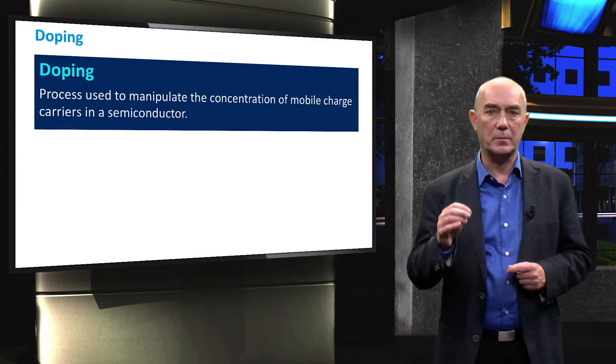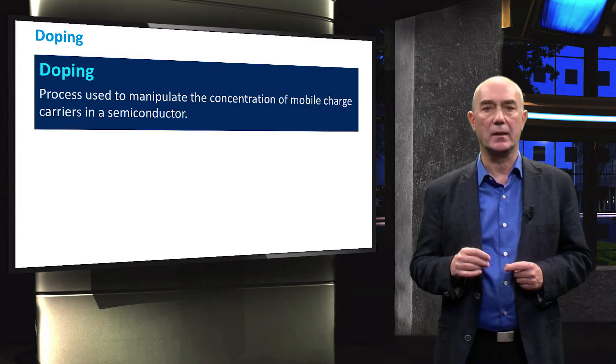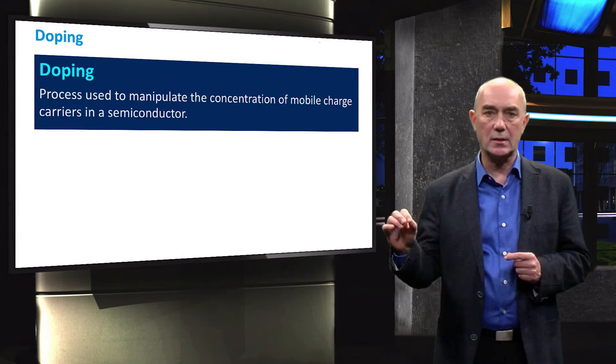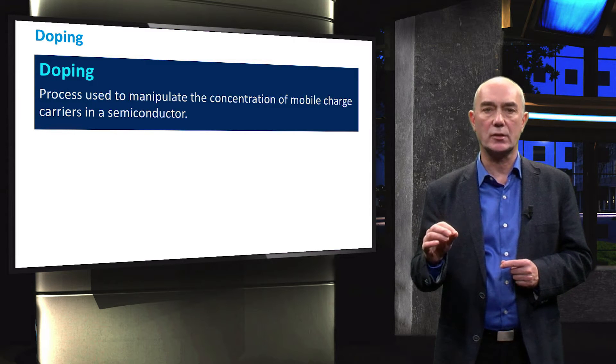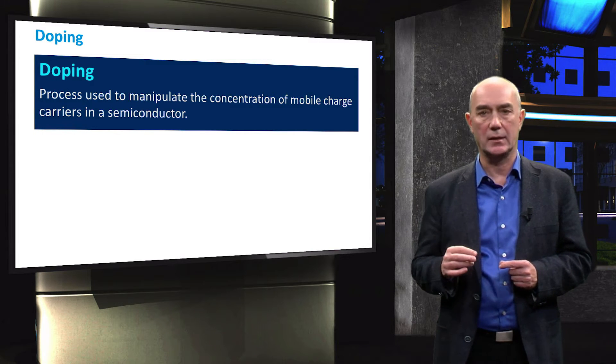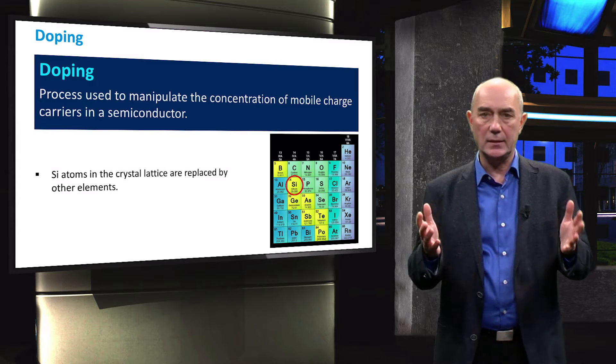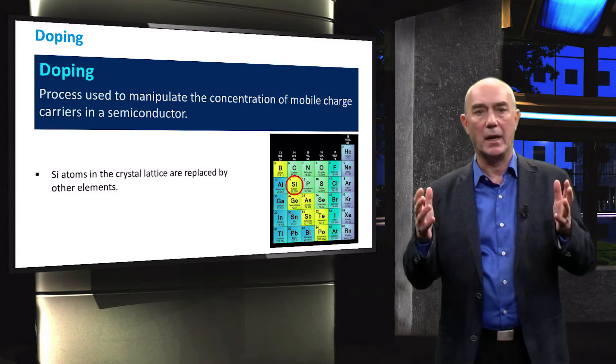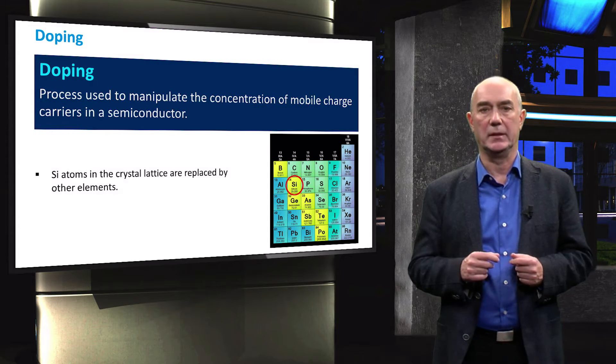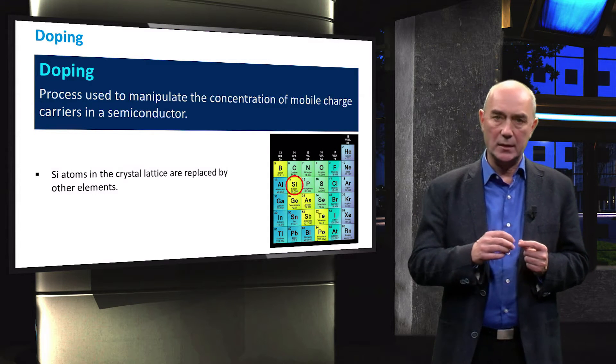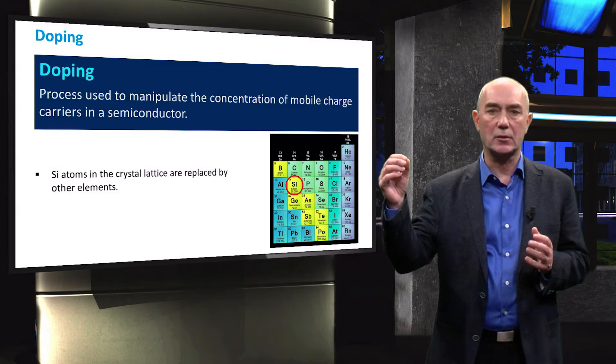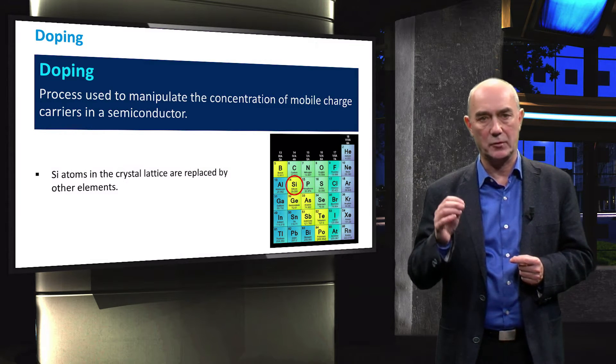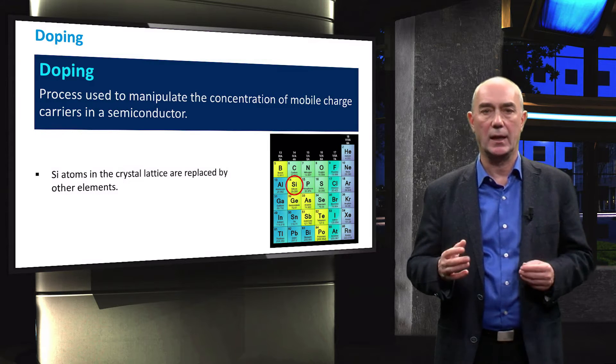A way to control the performance of a silicon-based device is doping the material. Doping is a process to manipulate the concentration of mobile charges in a semiconductor. This is done by replacing silicon atoms in the lattice by atoms of a suitable element. Doping will increase the electrical conductivity of a semiconductor. Common doping elements for silicon are boron and phosphorus.